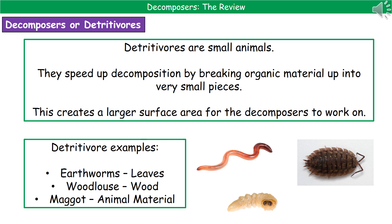Three examples of detritivores are shown in the pictures. Earthworms consume leaves and release smaller pieces of leaves that decomposers can then break down. The woodlouse, as its name suggests, does the same thing with wood. And maggots do the same thing with animal material.